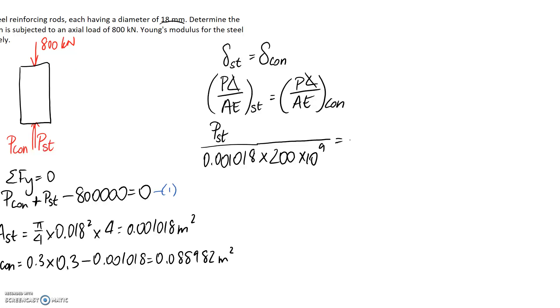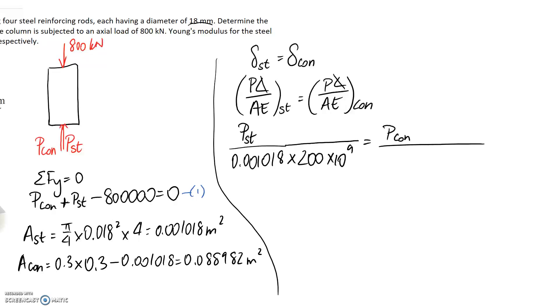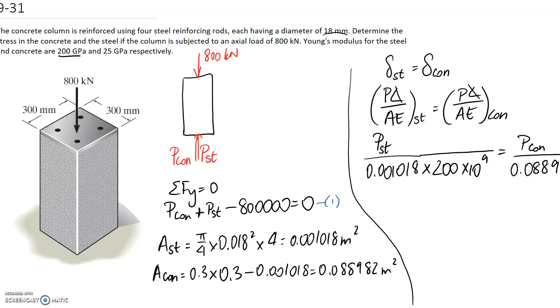So now we just need to fill in the other side of the equation. We know that P for the concrete is the unknown that we're going to need to solve for. We need to divide by the area of the concrete, which I just worked out. And we need to multiply it by Young's modulus. And again, we were given that back up in the question. For concrete, it was 25 gigapascals.